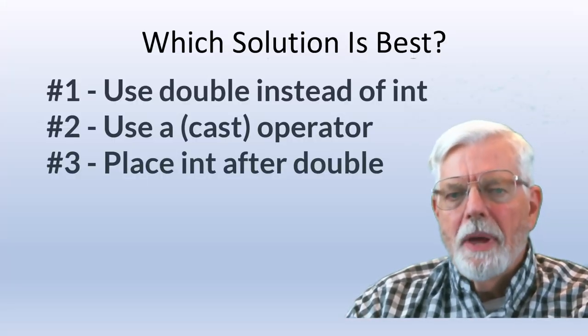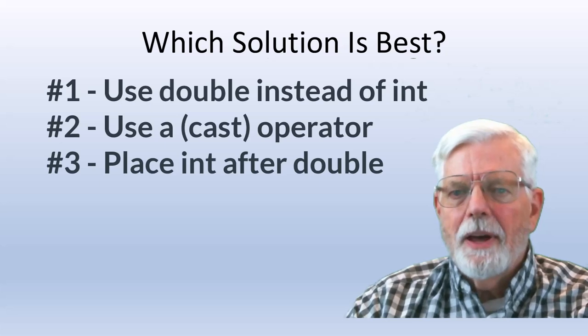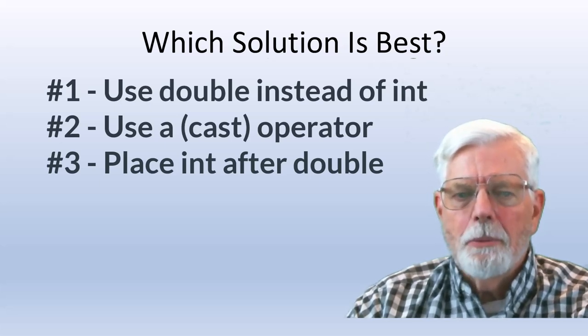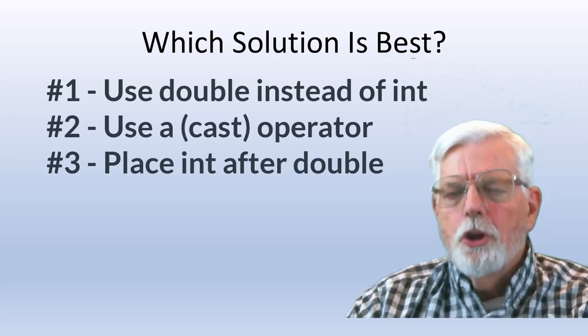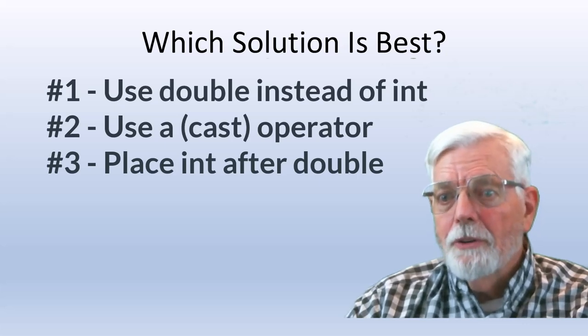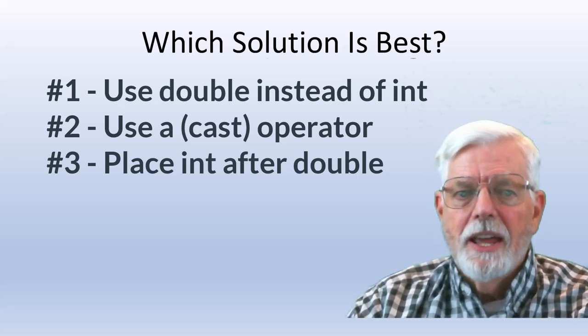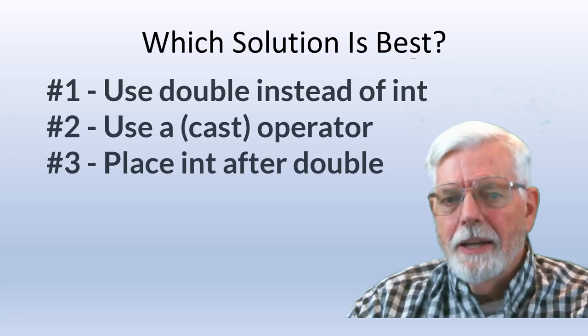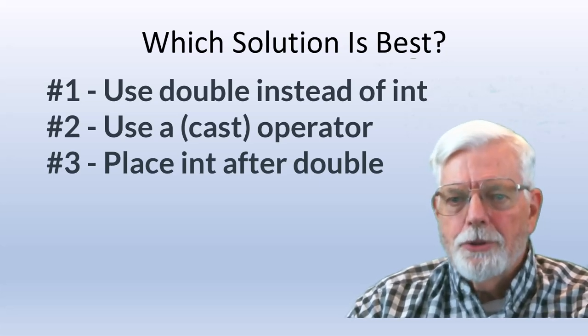Regardless of which method you choose to get the 5 divided by 9 to be computed as a double instead of an integer, you will get the correct results of converting 20 degrees Celsius into 68 degrees Fahrenheit. And the same for all other temperature conversions.